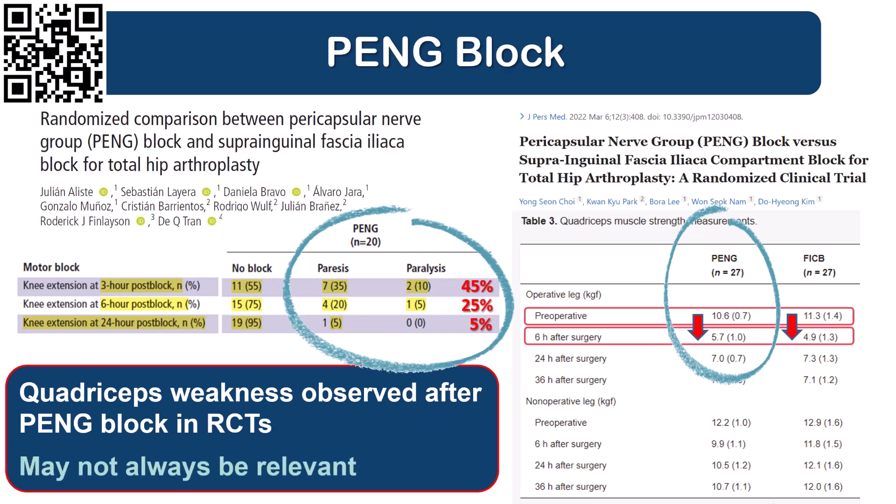In some settings, quadriceps weakness won't matter — for example, in preoperative hip fracture analgesia — so this consideration won't always apply. But it's important to be aware that this is a side effect that is somewhat technique dependent and can thus be controlled for to some extent.